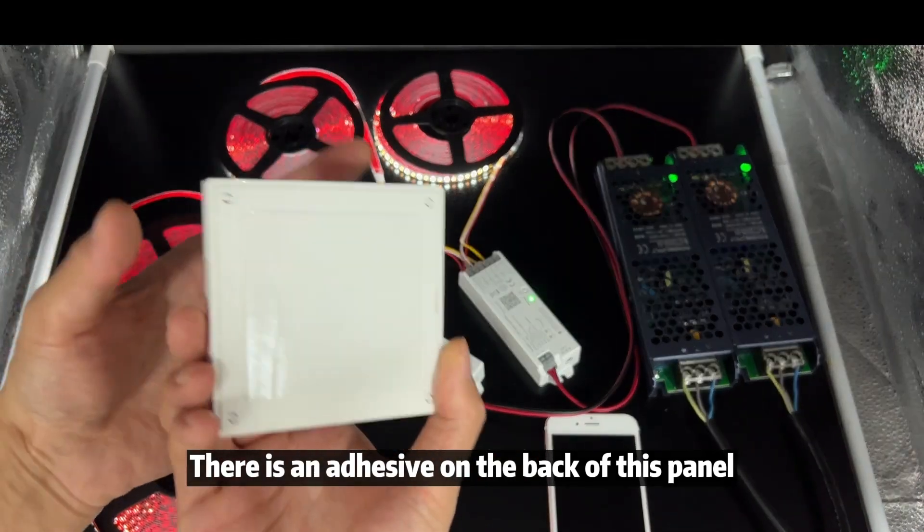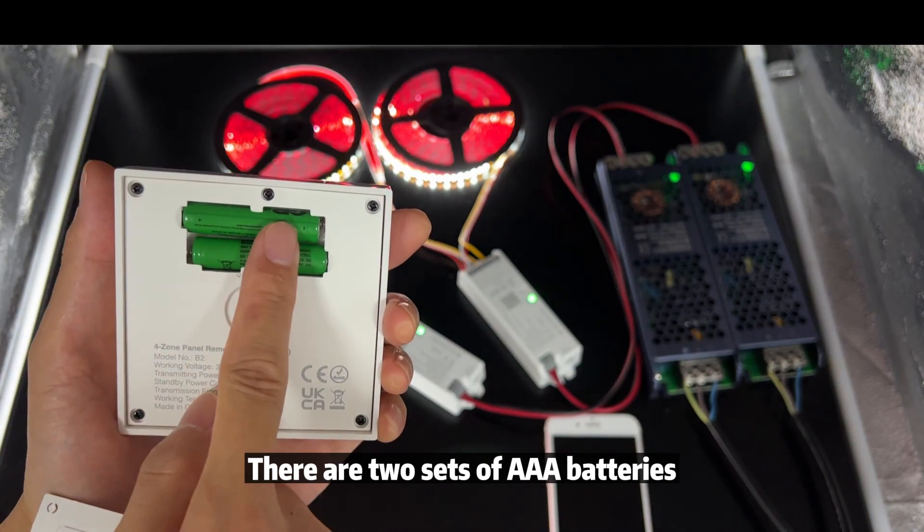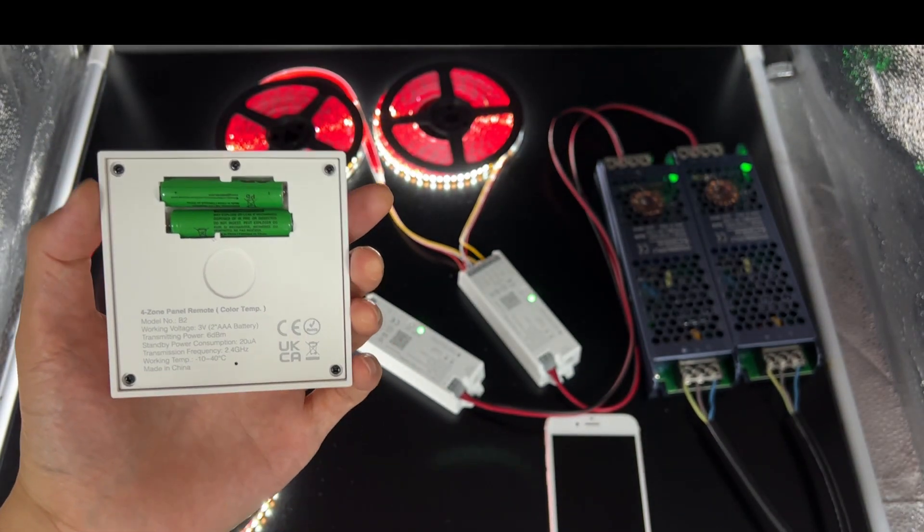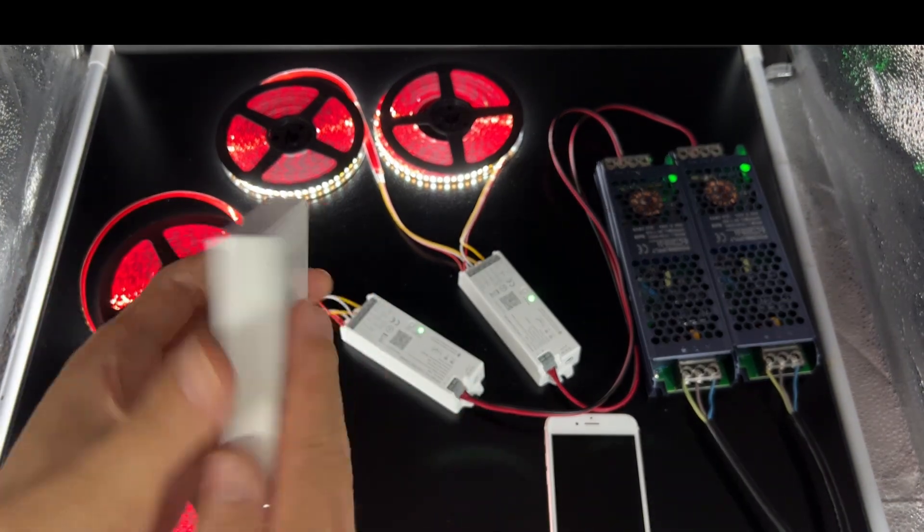There is an adhesive on the back of this panel. Can be directly attached to the wall. There are two sets of AAA batteries. Use as a remote control. It can be used for 2 to 3 years without changing the battery.